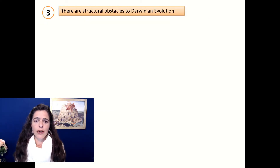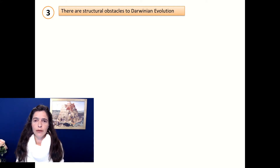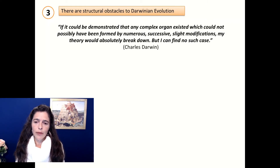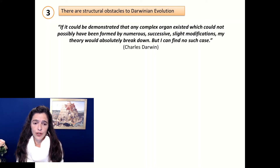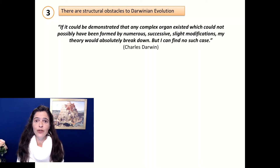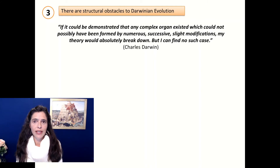Number three is that there are structural obstacles to Darwinian evolution. Let me quote Darwin here: 'If it could be demonstrated that any complex organ existed which could not possibly have been formed by numerous, successive, slight modifications, my theory would absolutely break down. But I can find no such case.' Again, at the time of Darwin, there was no serious work done in microbiology. Now we don't have an excuse to continue believing in this — and we'll see why.